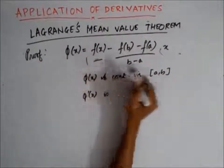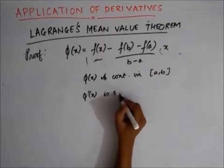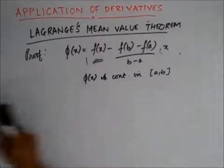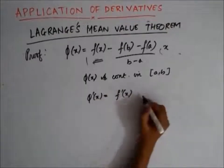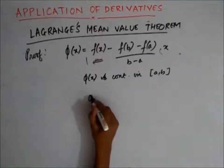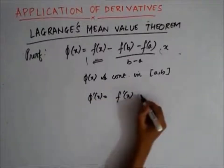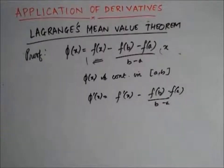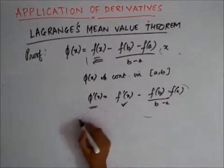Since [f(b) minus f(a)] divided by (b minus a) is a constant, φ'(x) is also continuous. Now, we need to prove that φ(x) is differentiable. To prove φ(x) is differentiable, let's look at φ'(x). Since f(x) is differentiable and the second term is a constant, φ(x) is also differentiable.